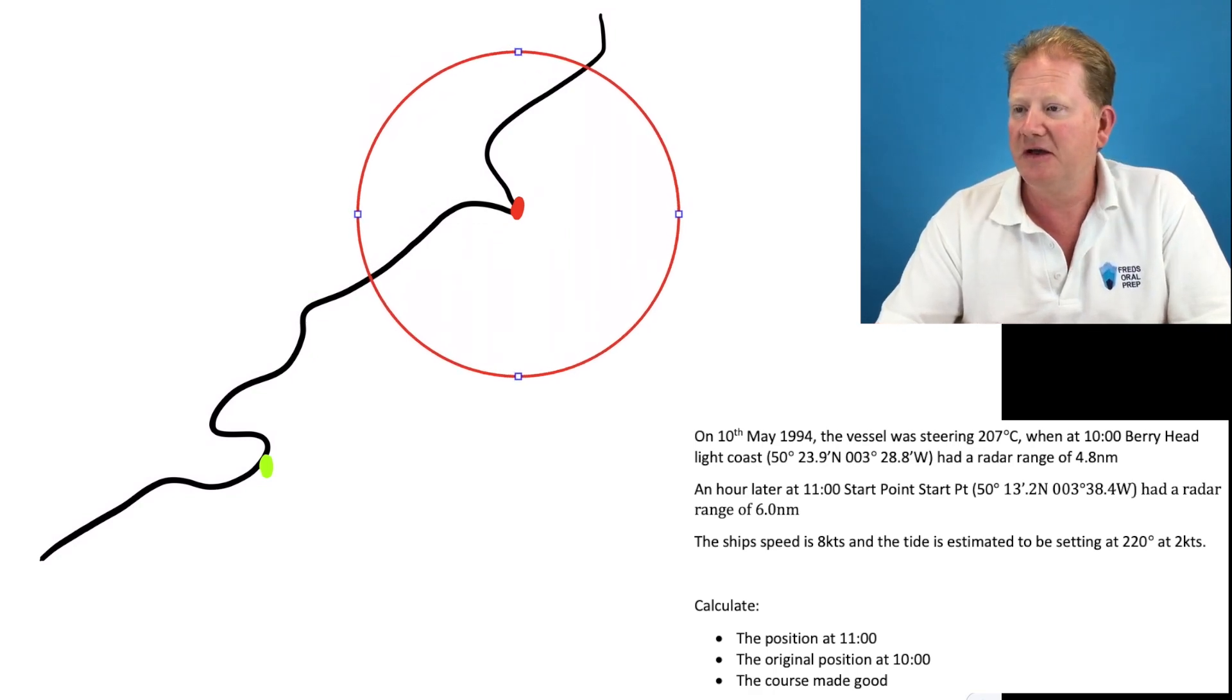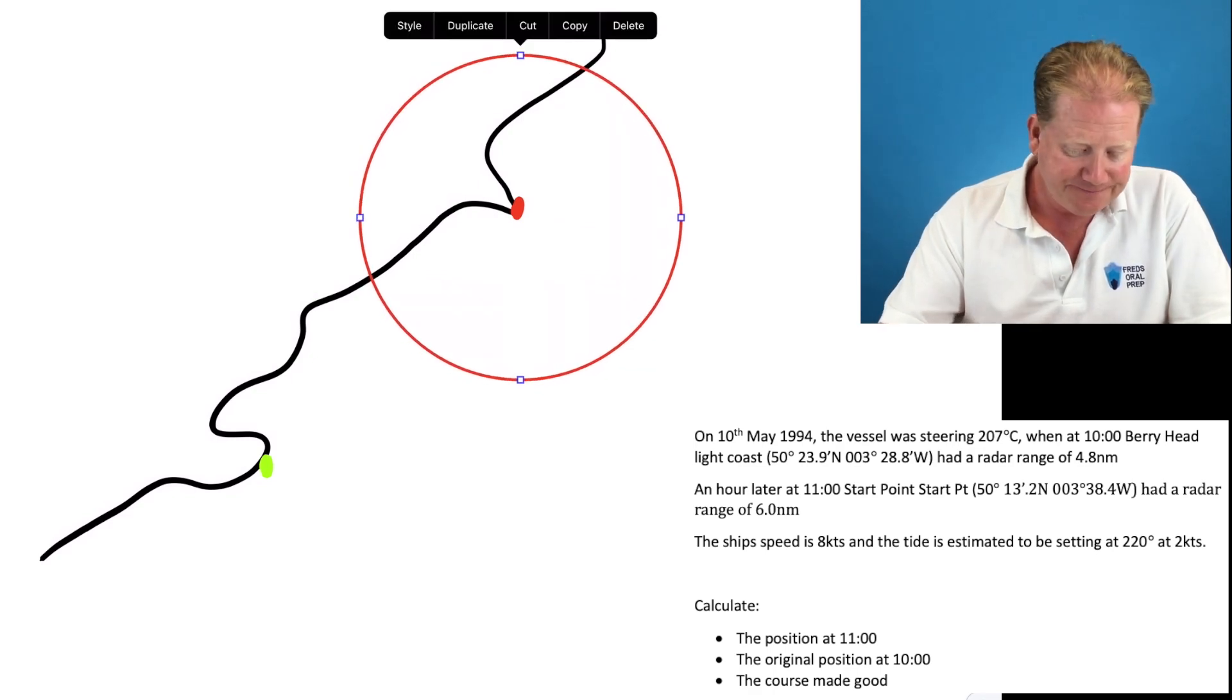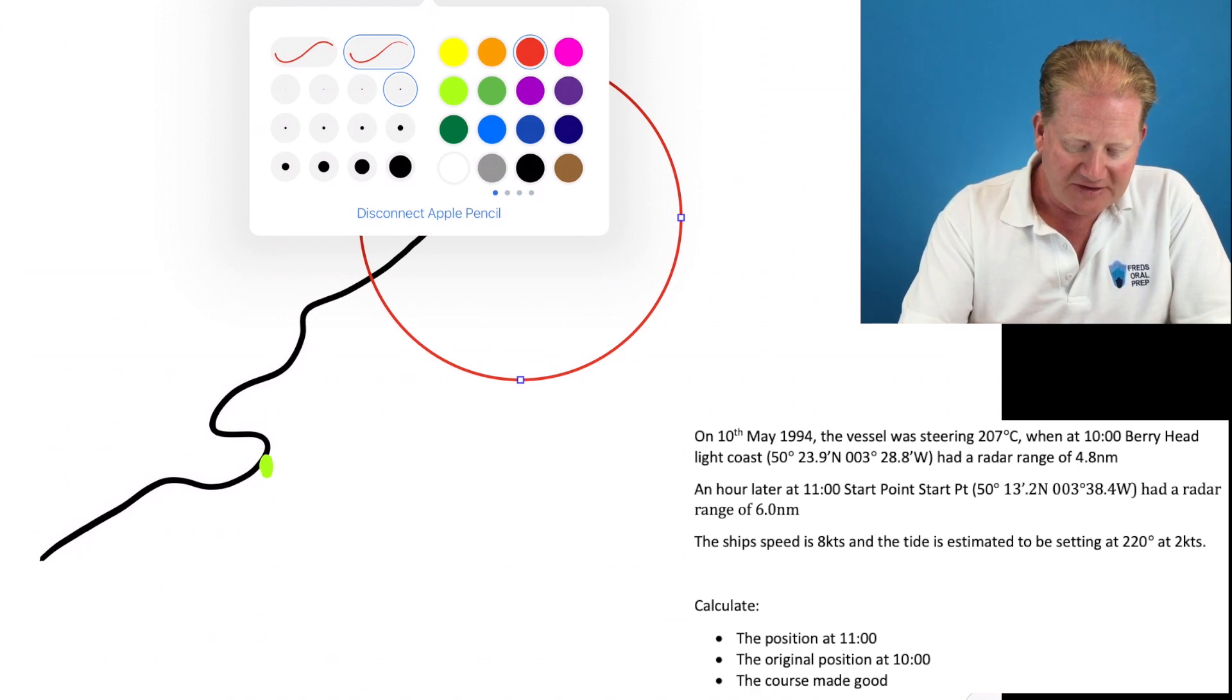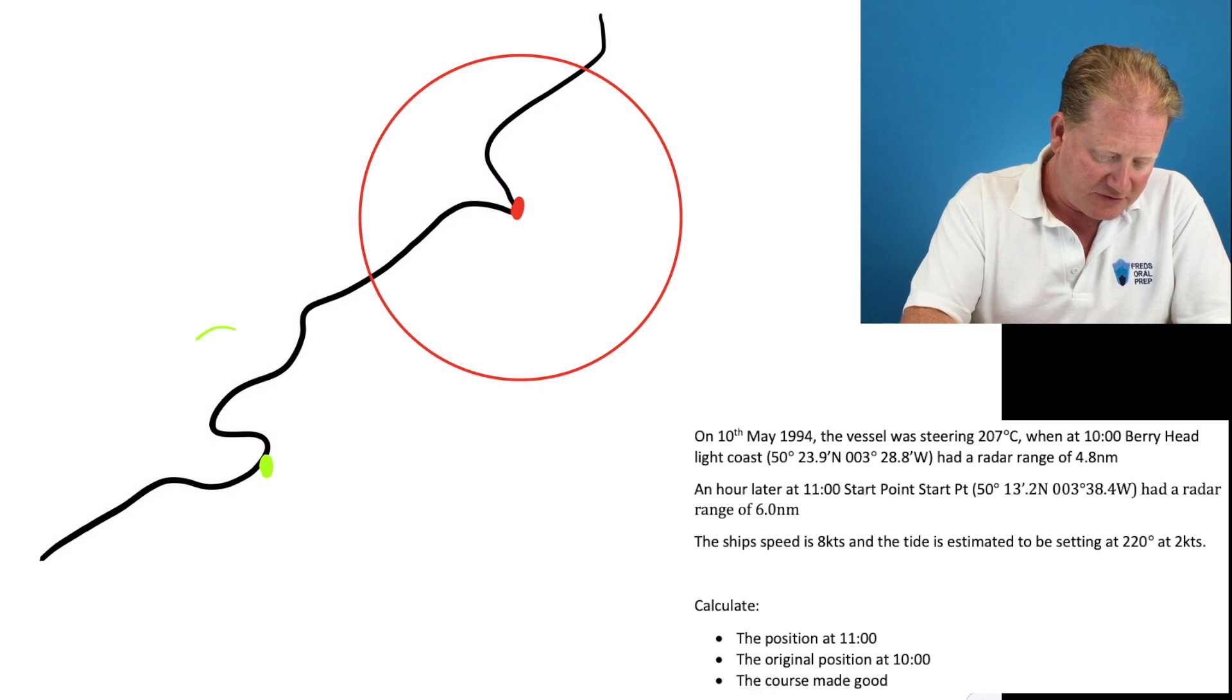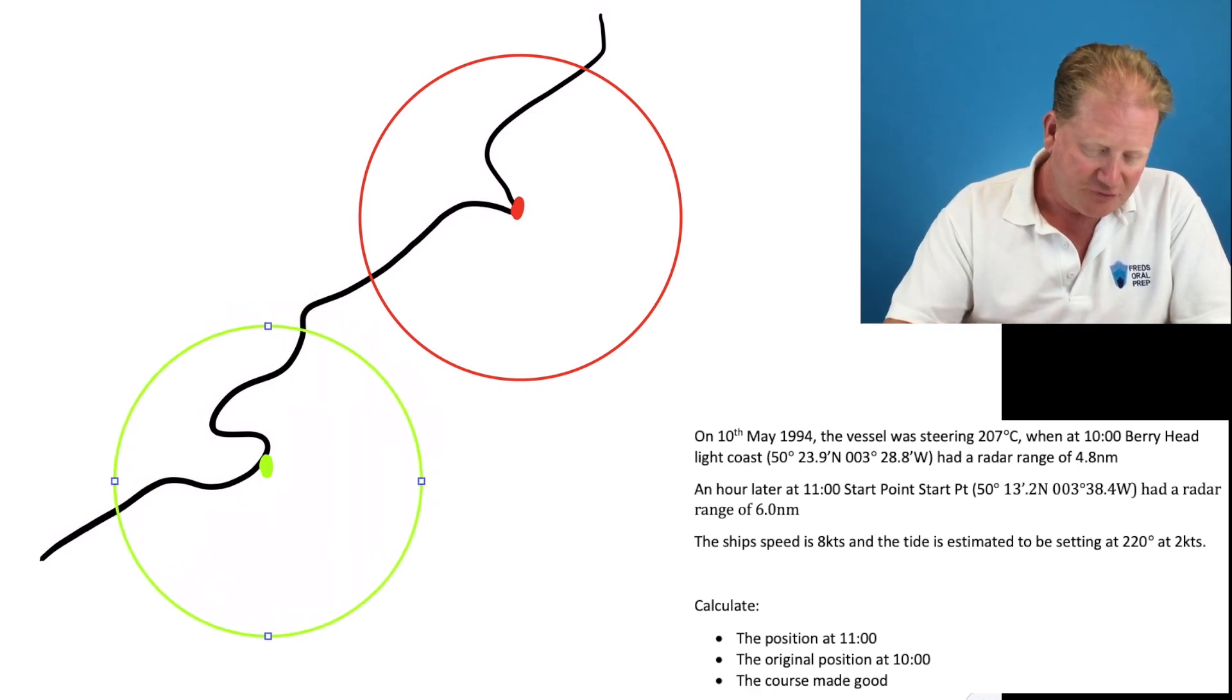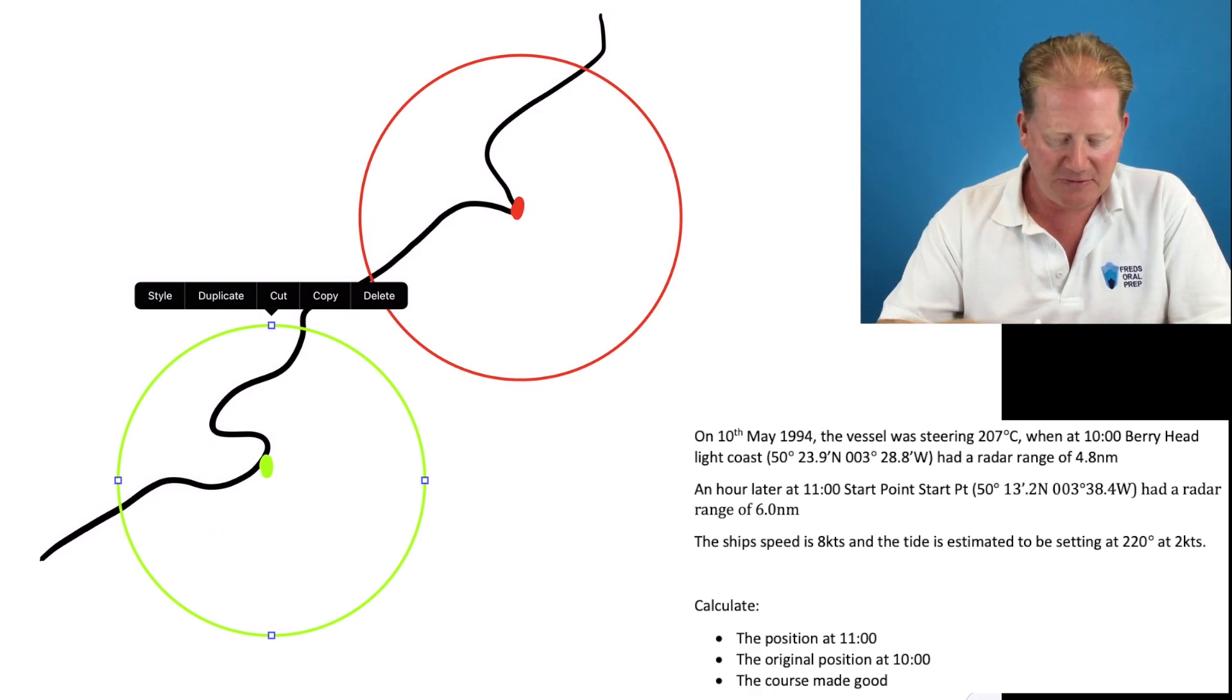Now the red conspicuous point, we work out at 10 o'clock that we have a radar range of six miles or eight miles. On the 10th of May the original range of Berryhead is 4.8 nautical miles. And then of the second one, which is Start Point, we have a radar range of six miles.